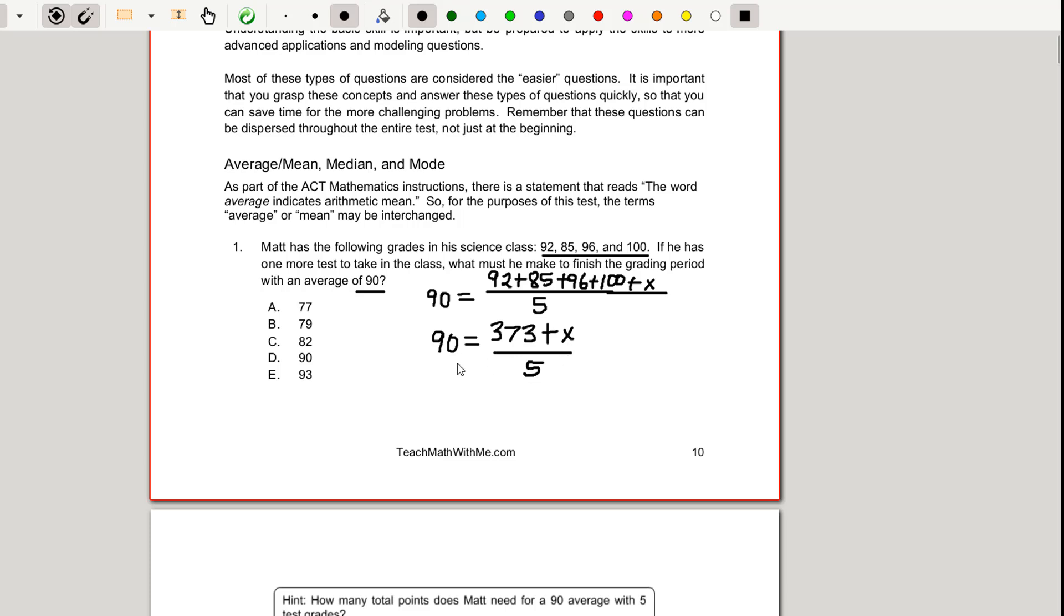When we multiply 90 times five we get 450 equals the 373 plus X. So to find our unknown we're going to take the 450 and subtract from that the 373 of the points we already have and that leaves us 77. So at a minimum Matt needs to score a 77 to have an average of 90 and that is answer choice A.